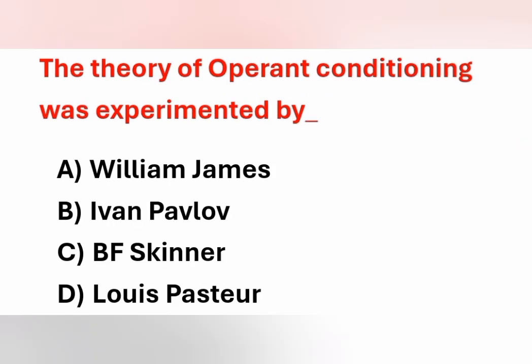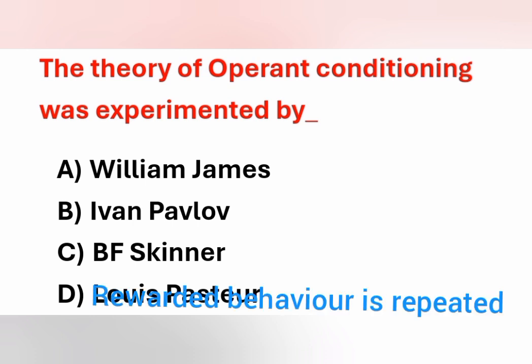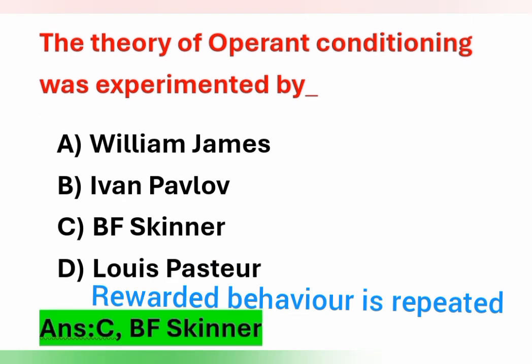Next question: the theory of operant conditioning was experimented by? Options: A) William James, B) Ivan Pavlov, C) B.F. Skinner, D) Louis Pasteur. In operant conditioning, learning occurs by a particular action or behavior followed by a reward. It was experimented by B.F. Skinner using a group of hungry rats — the rewarded behavior is repeated according to Skinner.